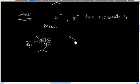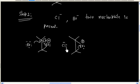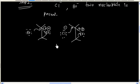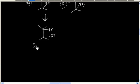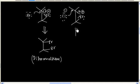One product is formed by attack of Br⁻, and another product is formed by attack of Cl⁻. So one product we have is dibromoalkane, and another product is the bromo-chloro alkane.